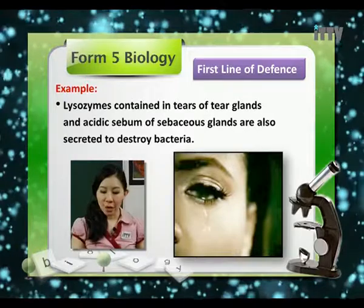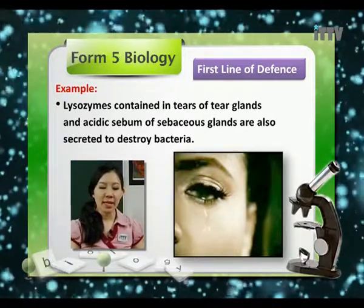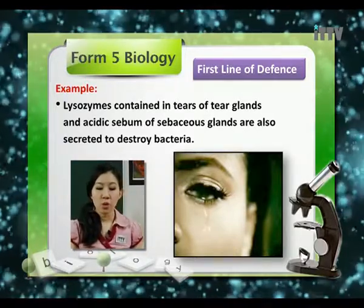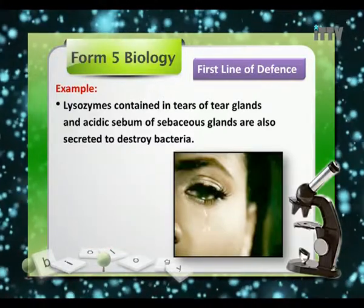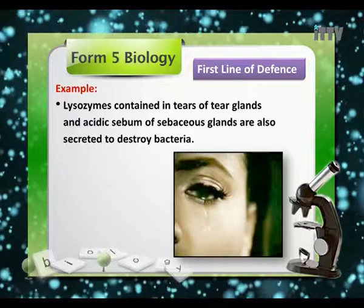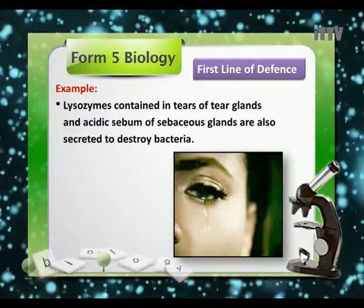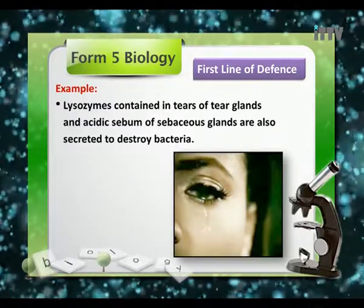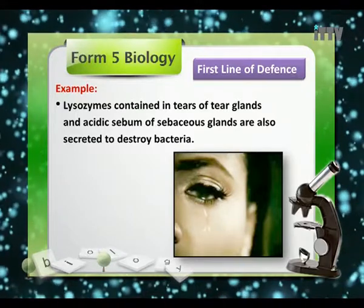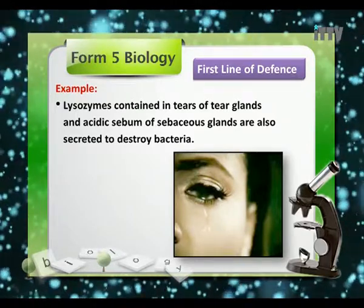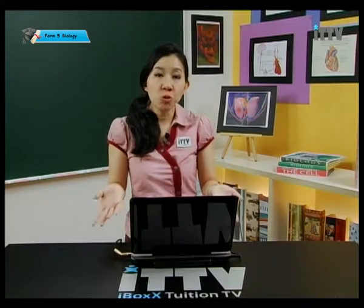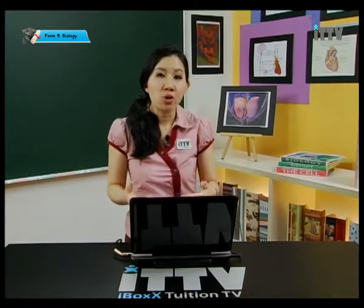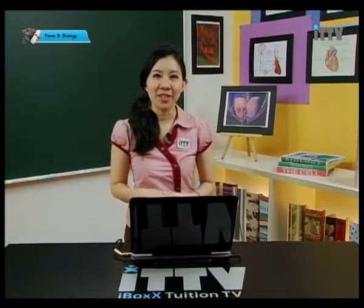Besides the skin, our first line of defense also includes mucous membranes. Apart from that, we have lysozymes which are contained in tears from tear glands. Acidic sebum from sebaceous glands is also secreted to destroy bacteria. The oil from our face can also destroy bacteria — it definitely has an important function.